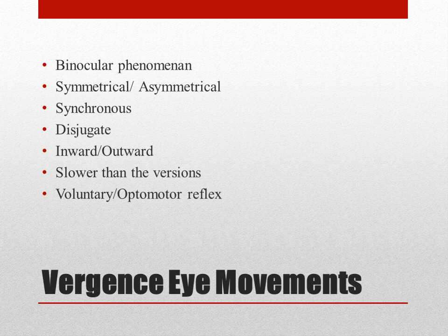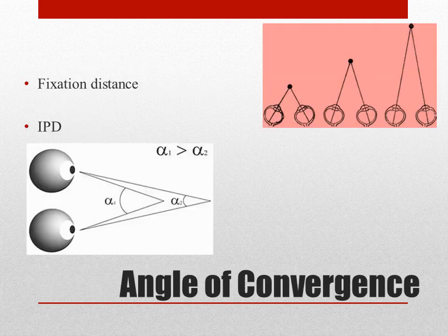Convergence can be voluntarily done by most individuals, but convergence can also happen due to the optomotor reflex, which we will be discussing in the latter slides. Now coming to the angle of convergence — let us make it very simple — it is nothing but the amount by which the two eyes are coming close together towards the nose in order to fix at a particular object of interest. So that means it is the degree by which the two eyes are getting crossed to fixate at a particular object of interest; that amount of deviation is the angle of convergence. The angle of convergence depends on the fixation distance and the interpupillary distance.